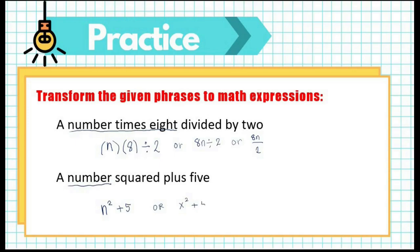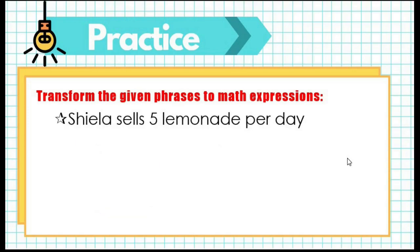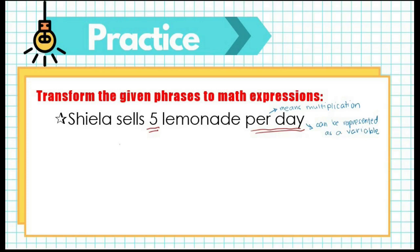Let's now have some realistic examples. Sheila sells 5 lemonades per day. We want to represent this as a mathematical expression. The word 'per' is associated with multiplication. So to know Sheila's sales for succeeding days, we multiply 5 by the number of days, where 'day' is represented as a variable. We can write this as 5x, where 5x pertains to selling 5 lemonade glasses per day.